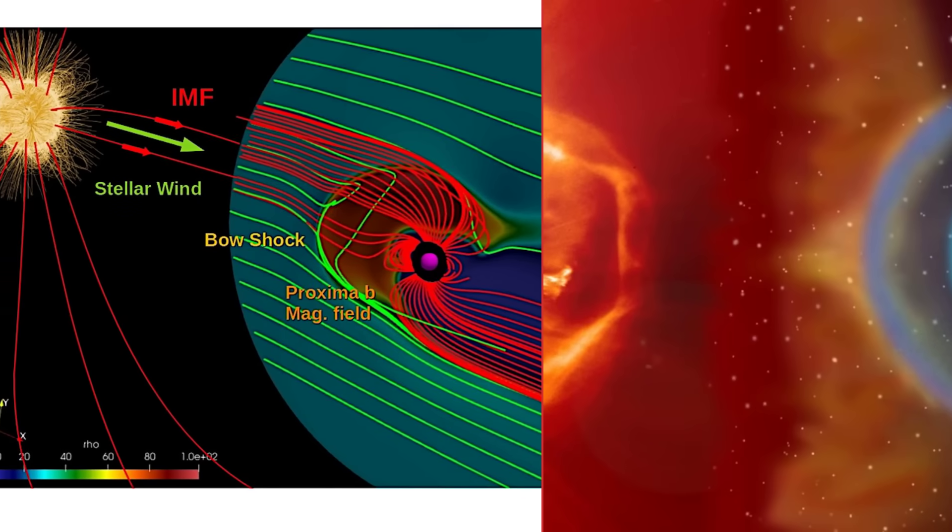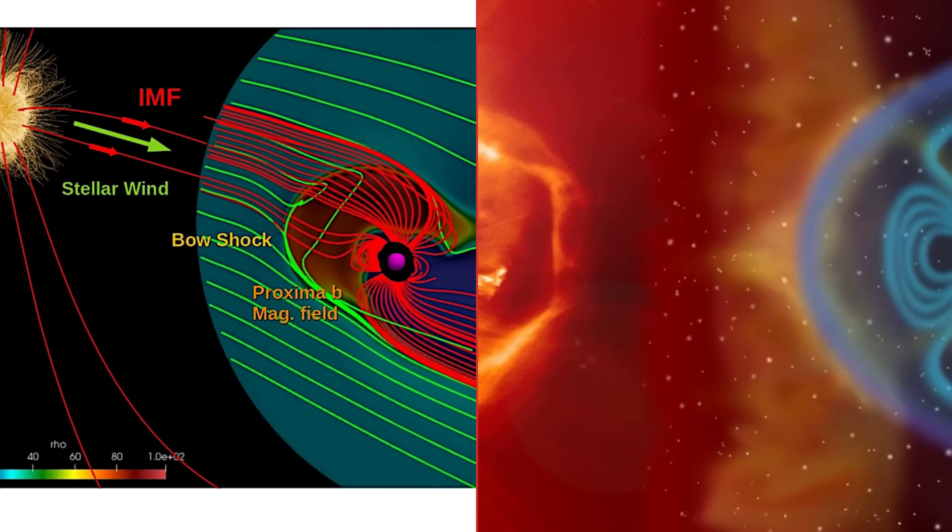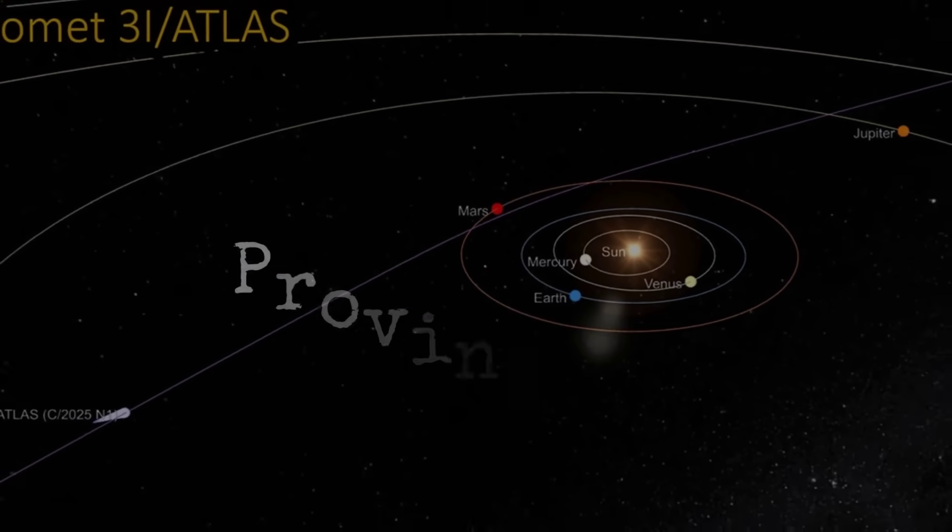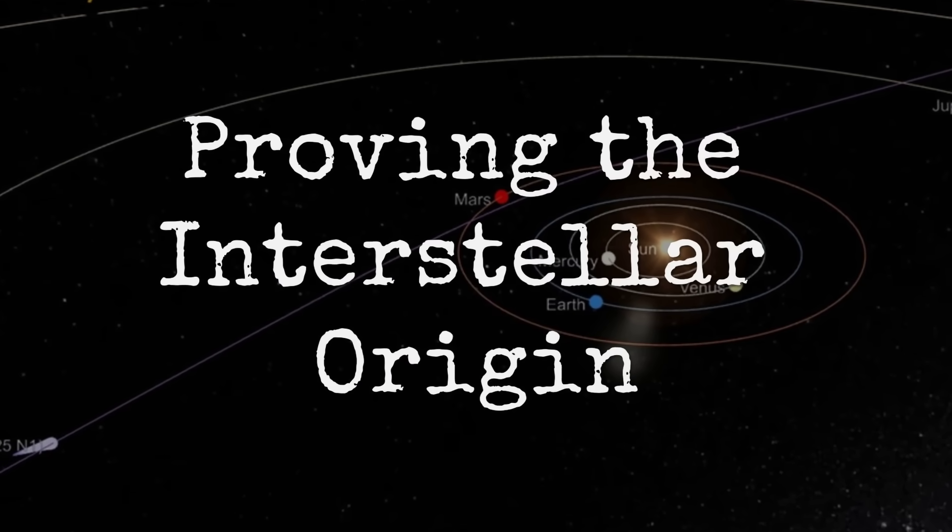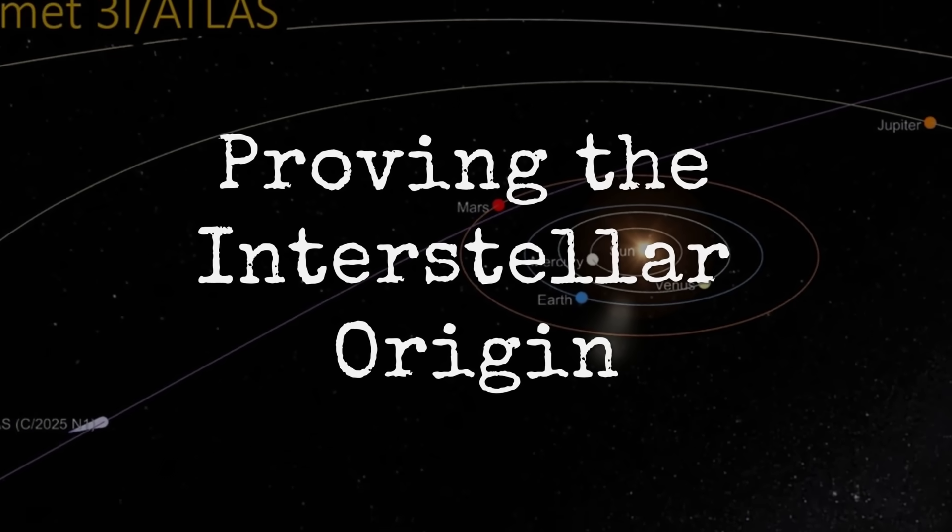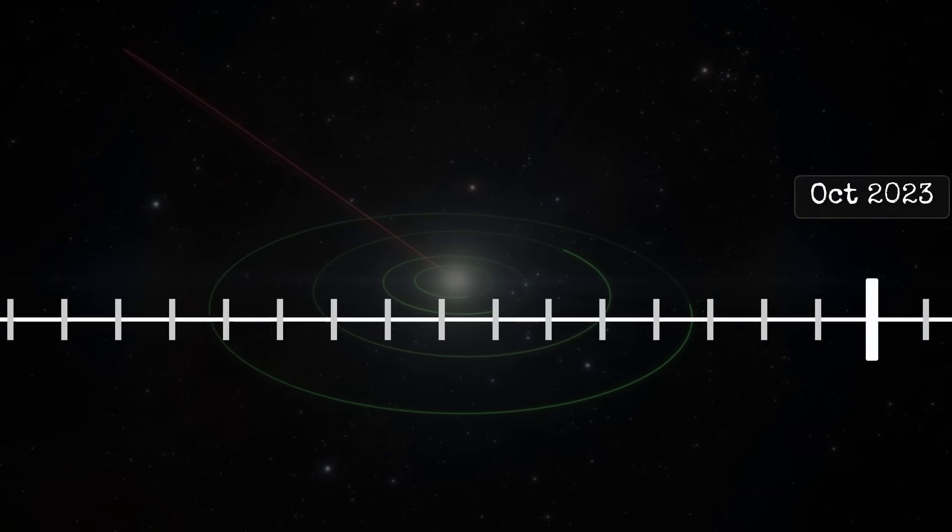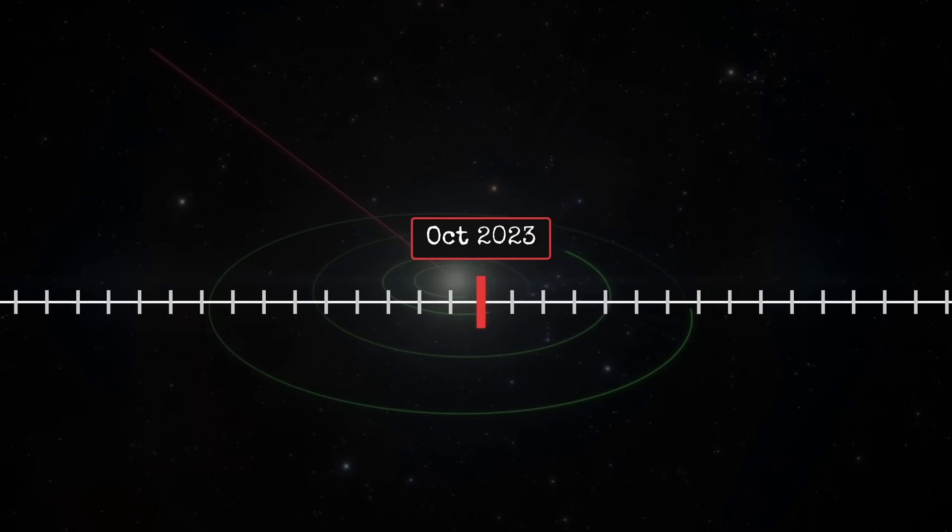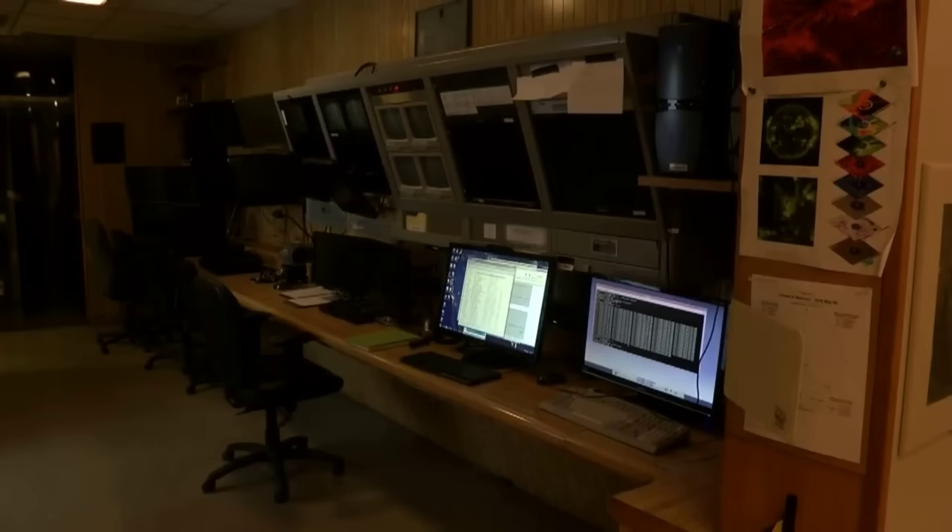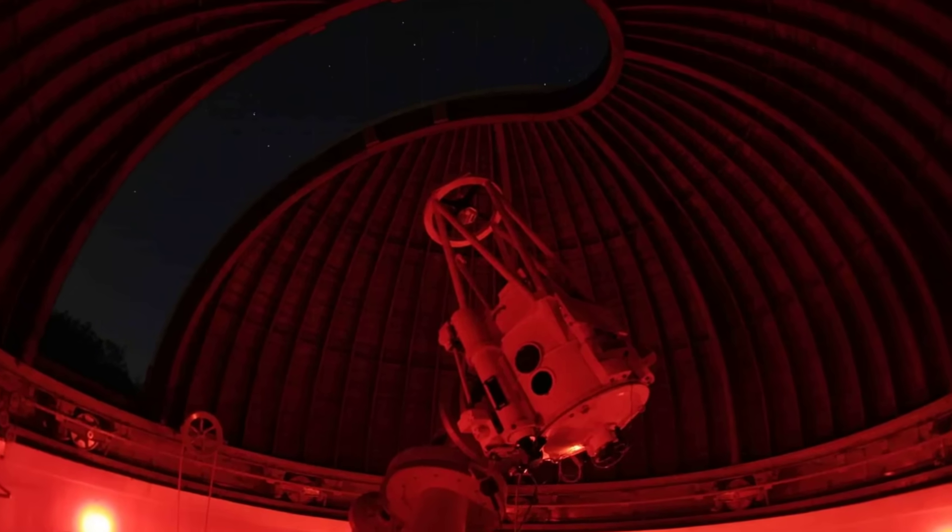The superior conjunction occurred on October 21st, when 3I/Atlas passed directly behind the sun from our perspective. During this time, and continuing through perihelion on October 29th, we have absolutely no observational data. We're flying blind.